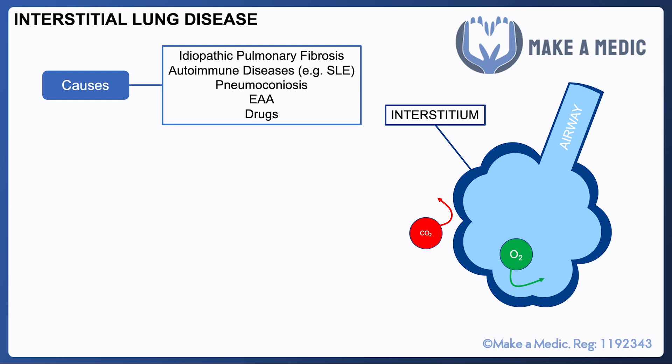Causes include idiopathic pulmonary fibrosis, where it tends to happen for no real reason whatsoever. It's associated with various autoimmune diseases such as SLE. It can be caused by inorganic dust such as pneumoconiosis, or organic dust such as extrinsic allergic alveolitis. There's also a bunch of medications such as amiodarone and nitrofurantoin which can cause quite troublesome interstitial lung disease.